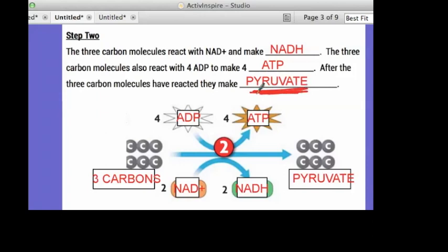Pyruvate, right there. So the ADP come in with two and they get energized by the three carbons and get more energy so they end up with three. And the NAD plus goes in and comes out as NADH. So it starts off as a three carbon molecule, but by the end they're a more powerful three carbon molecule known as pyruvate.